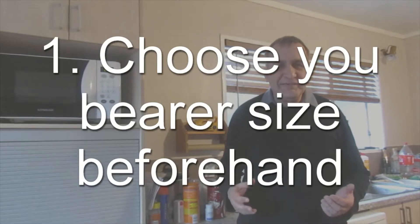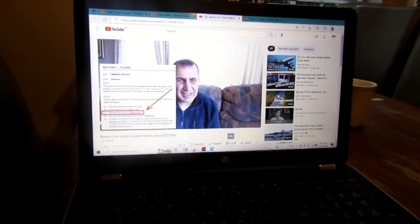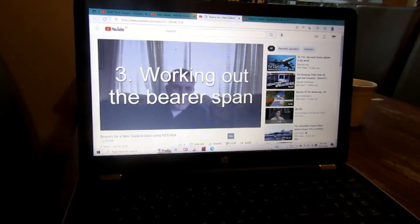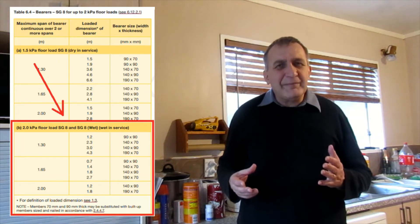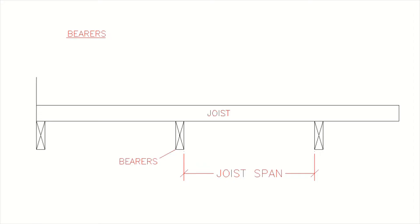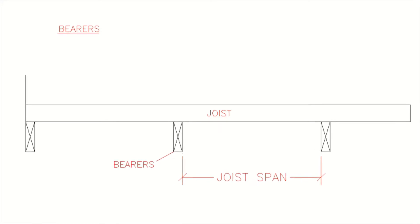The first thing before choosing your joist size and spacing is to choose your bearer size. I've done a separate video on this — the link is in the description below. If you look at that you can work out your bearer size, and from the bearer size you'll be able to work out your joist span, as you will know the distance between the bearers.